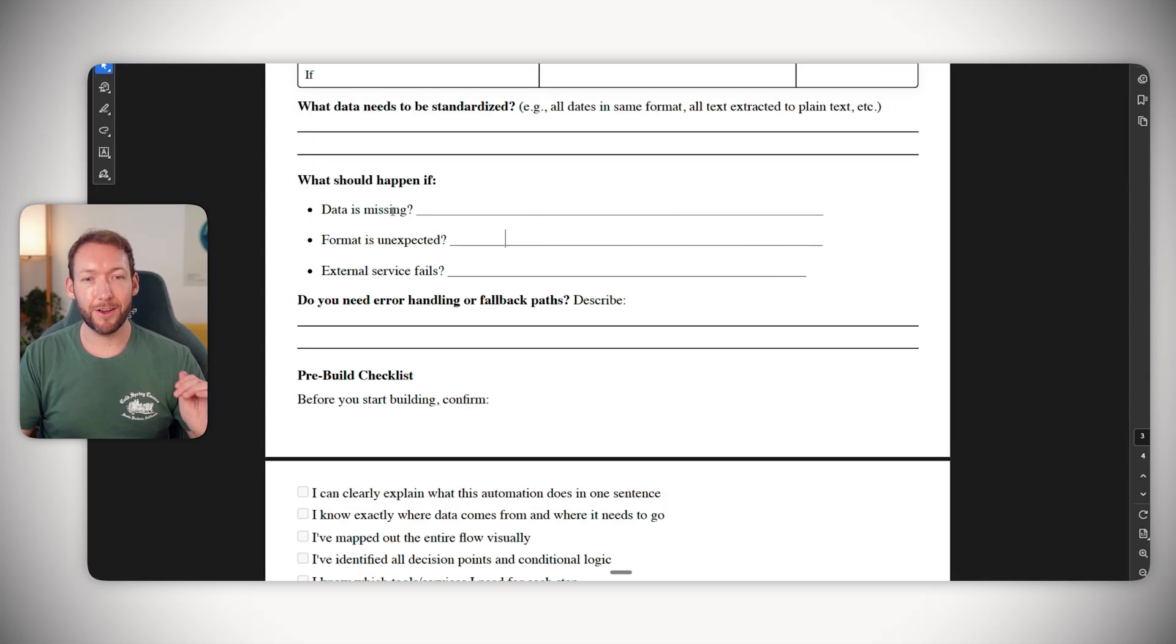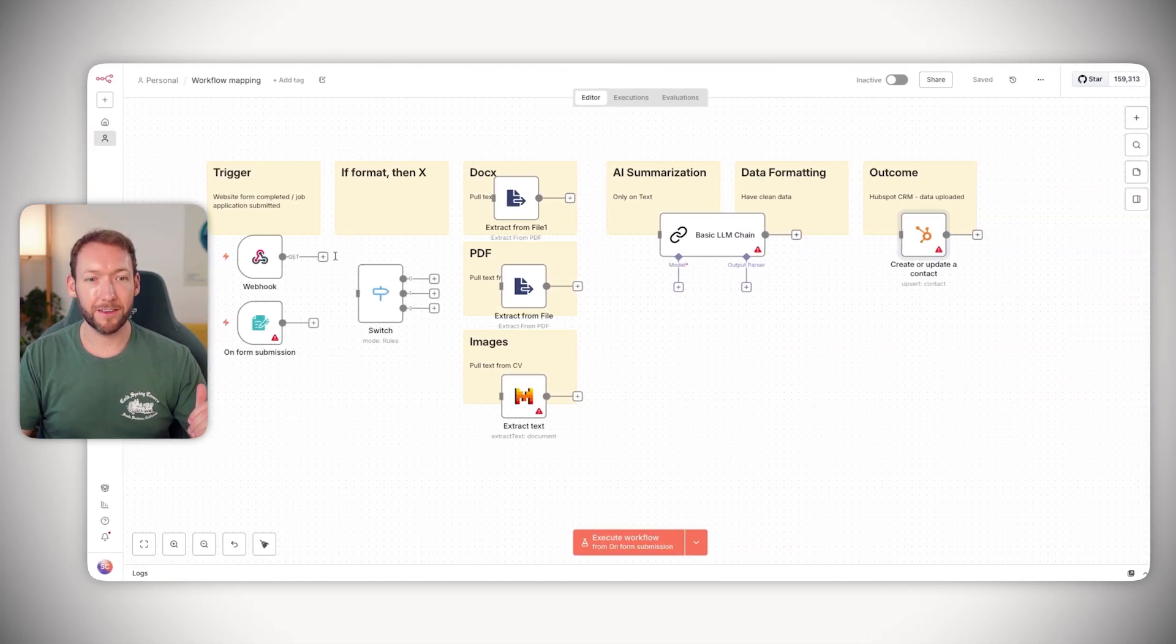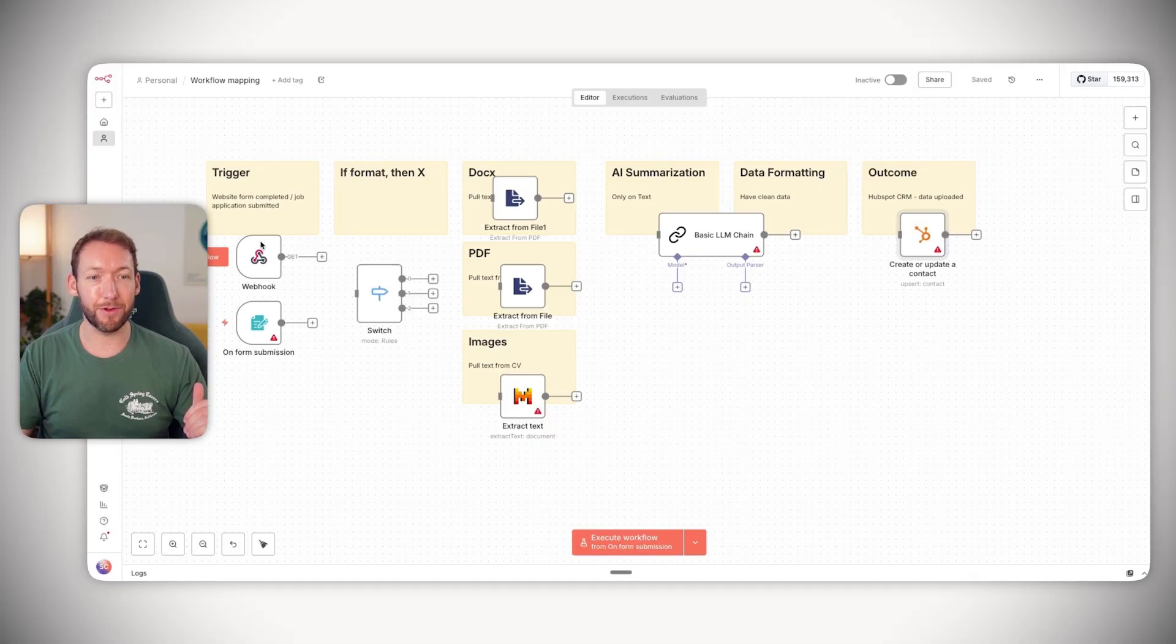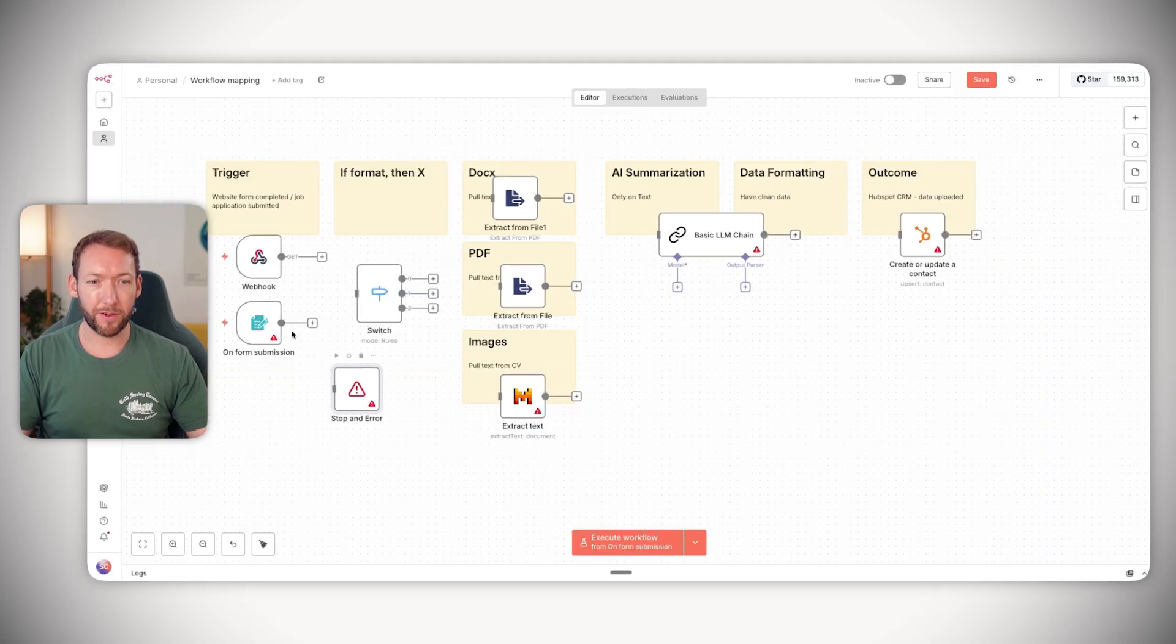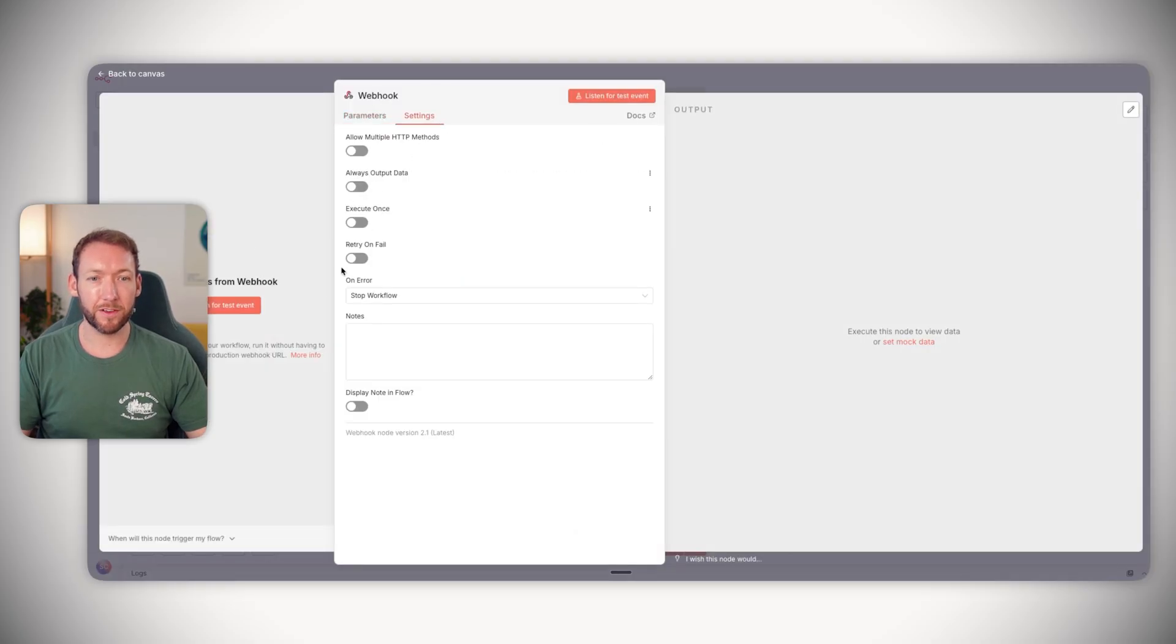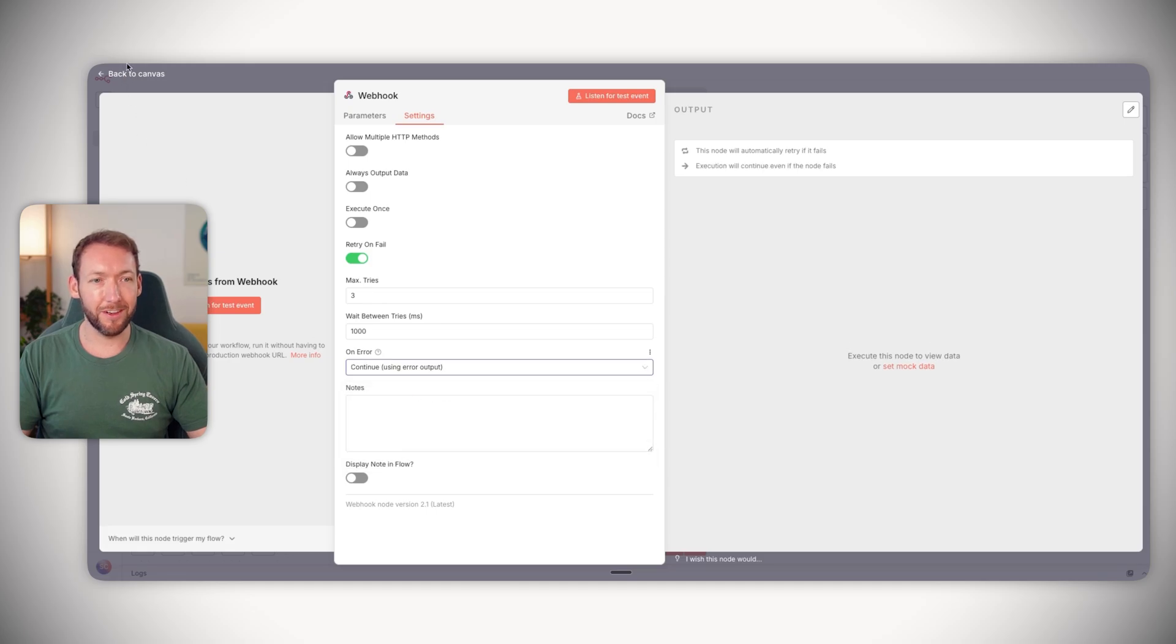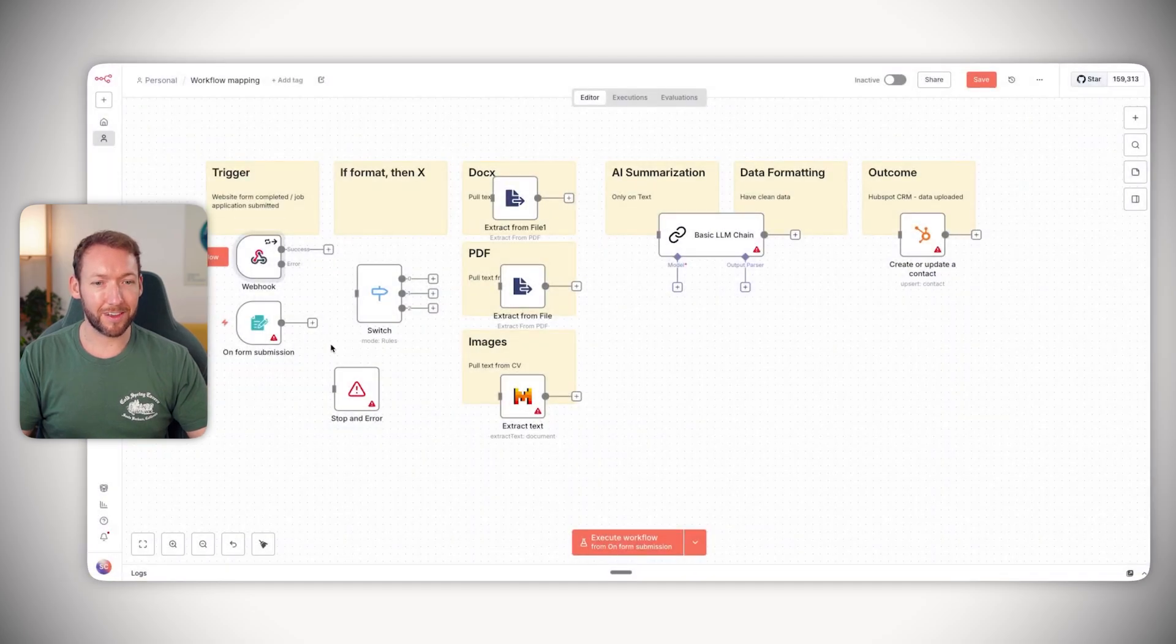And then we've got to consider the edge cases: what should happen if data is missing? So if we do not receive data, we receive empty data from here, then what should we do? We should probably throw something like an error and stop the workflow. And what we can do is in the nodes, say that let's get it to retry on fail. But if it just continues to fail, then we're going to use this second error output and throw an error. And what we can get this to do separately is to send us an email or send us a message if there's an error.